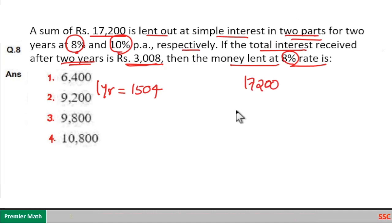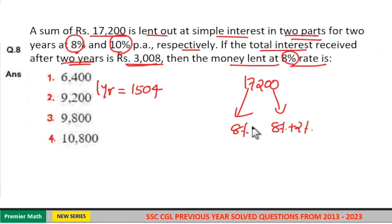The sum 17,200 is lent out in 2 parts. One part at 8% and other part at 10%. Consider the sum lent at 8% as X and sum lent at 10% as Y.